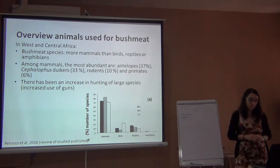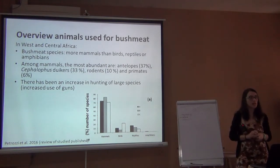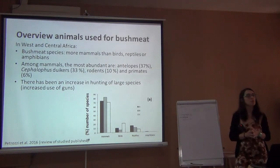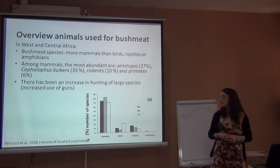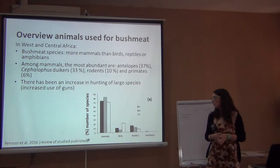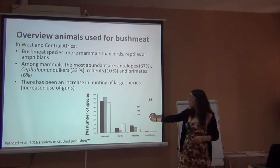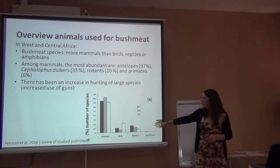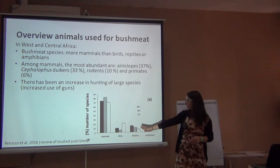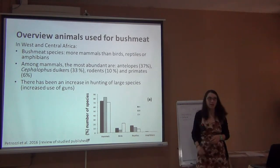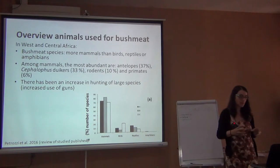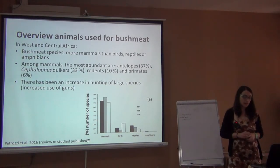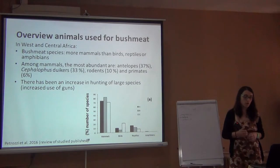In terms of species that are eaten, people generally prefer to eat mammals. This study showed that most species hunted and traded for bushmeat are mammals, across different parts of Africa. Most people prefer to eat mammals, with fewer birds, fewer reptiles, and very few amphibians. Among the mammals, the most abundant in trade were antelopes, duikers — which are cephalophes found in the forest — then rodents and primates.